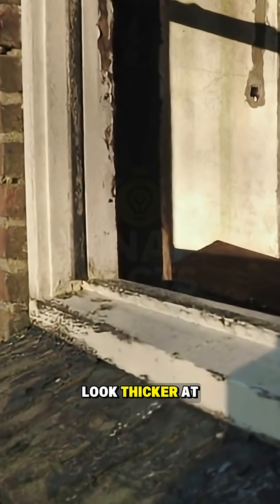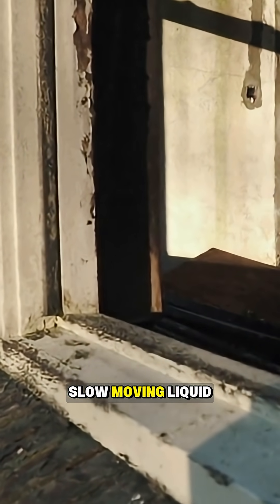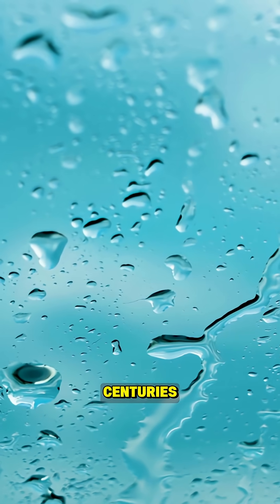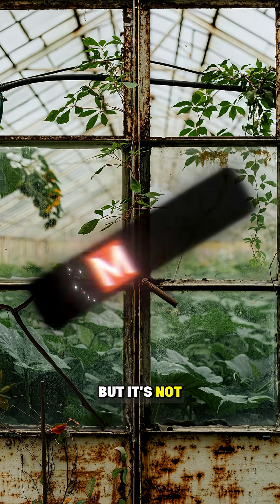Old windows sometimes look thicker at the bottom, which led to the belief that glass is a slow-moving liquid that flows over centuries. The idea sounds convincing, but it's not true.